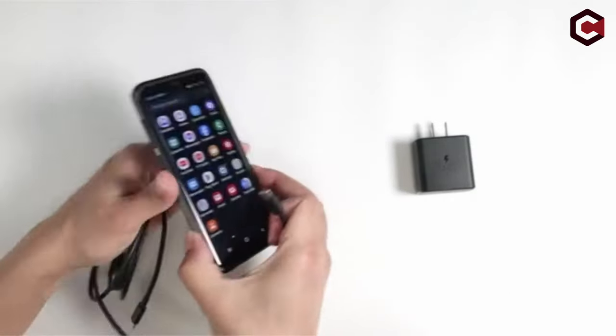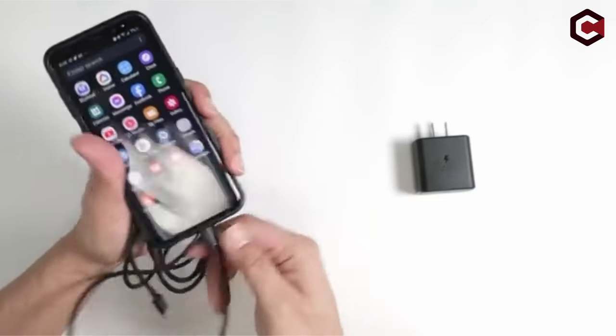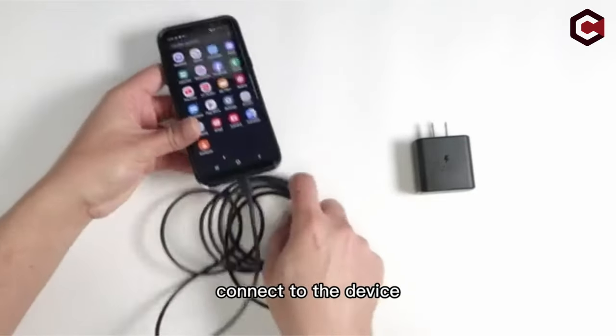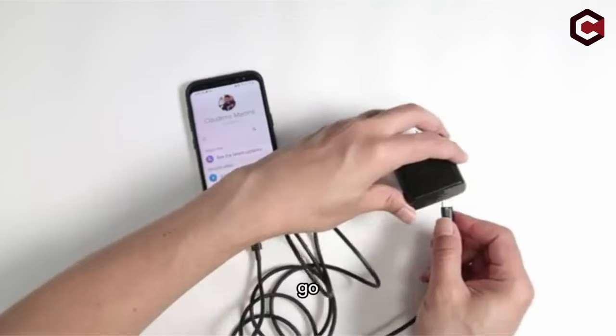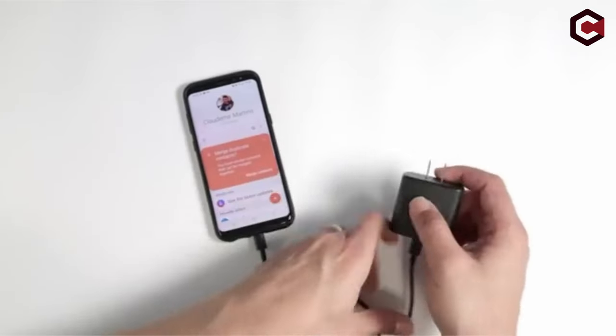The charger includes two 6-foot USB-C to USB-C cables for flexible charging and syncing at home, in the office, or while traveling. Built-in safety features ensure your devices are protected from potential damage, making it an ideal companion for quick and secure charging on the go.